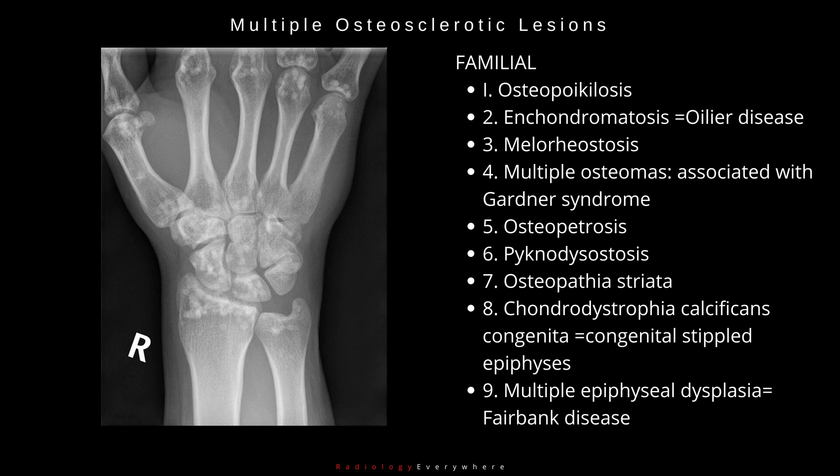A. Familial causes include: 1. Osteopoikilosis. 2. Enchondromatosis or Ollier disease. 3. Melorheostosis. 4. Multiple osteomas, associated with Gardner syndrome.